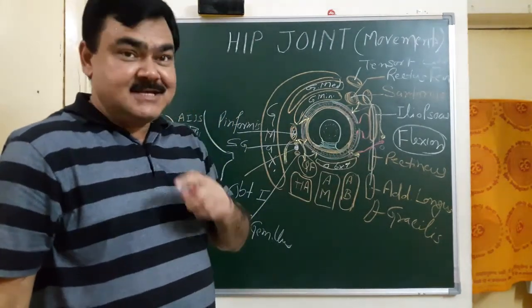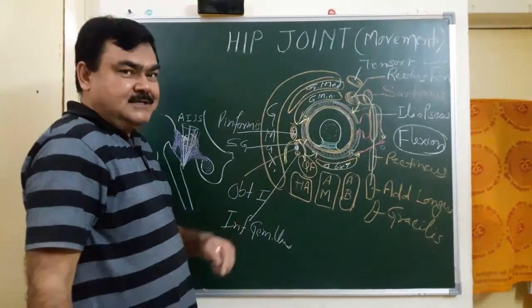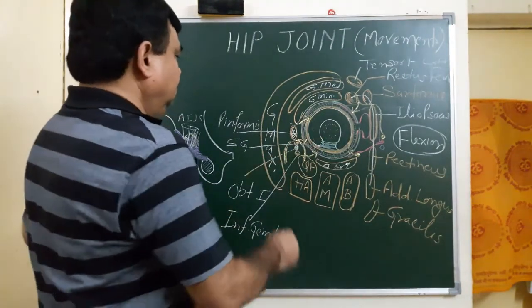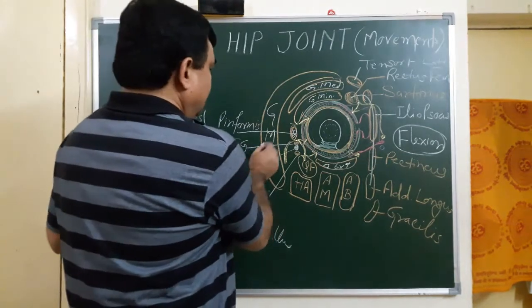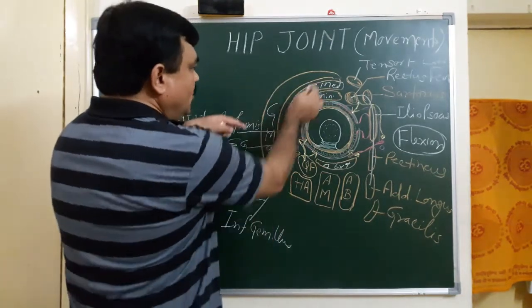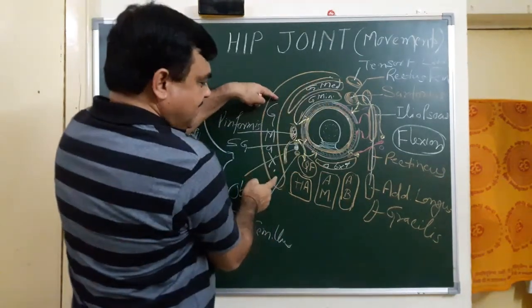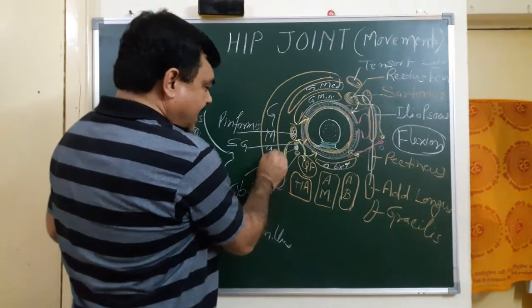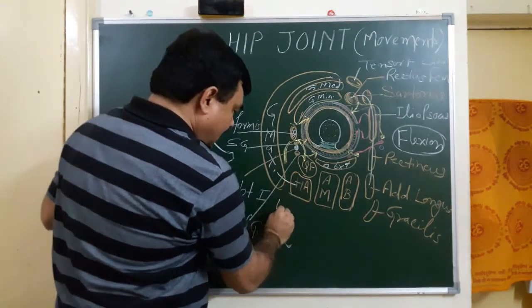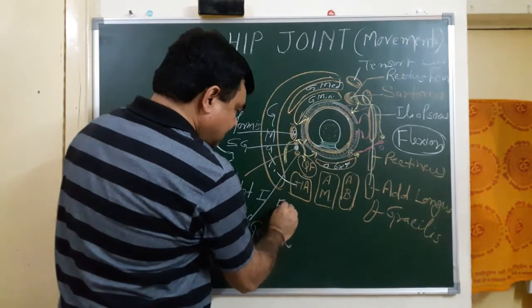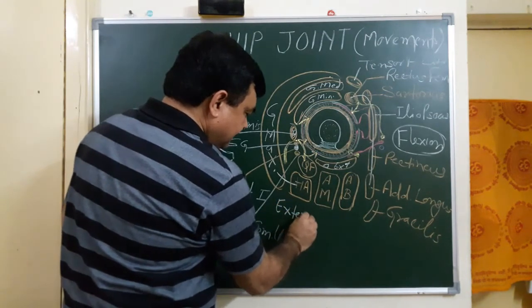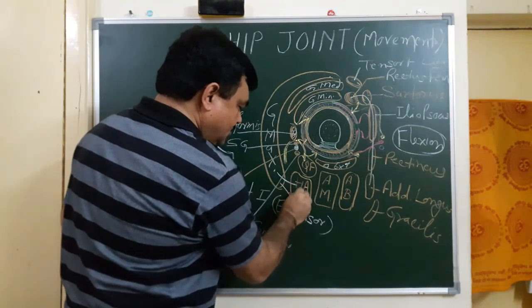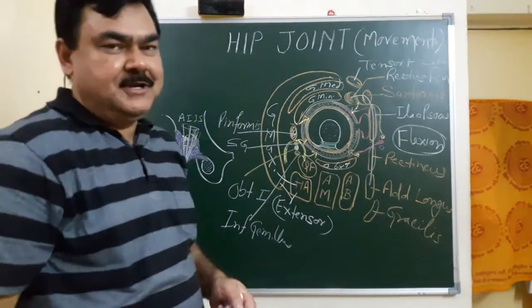The extensors at the hip joint are gluteus maximus and the hamstrings. Both gluteus maximus and the hamstrings are extensors at the hip joint.